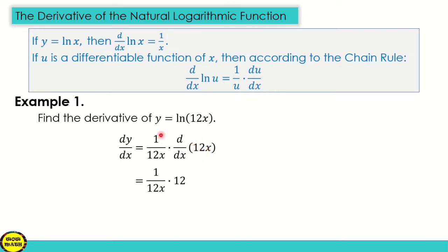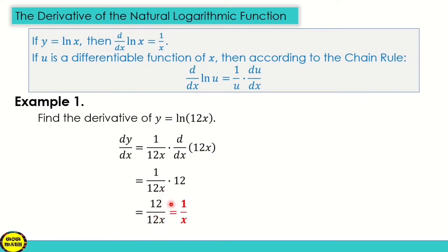So we have 1 over 12x times 12. That gives us 12 over 12x. The 12 cancels, so the final answer is 1 over x.